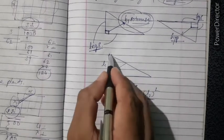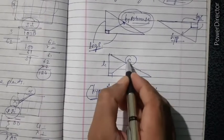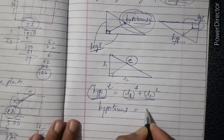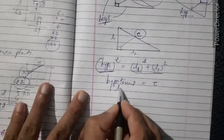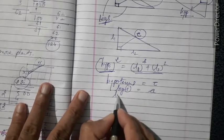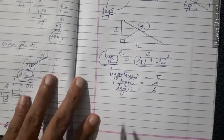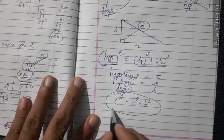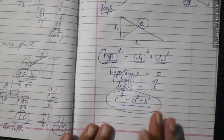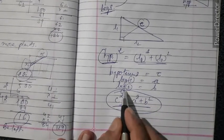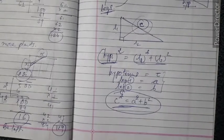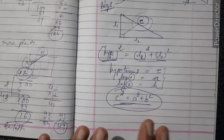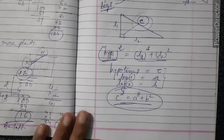We take the hypotenuse as c, leg one as a, and leg two as b. So according to Pythagoras: c² = a² + b². We use this formula to find the length of any side or the hypotenuse in a right angle triangle, or to check if given measurements form a right angle triangle.